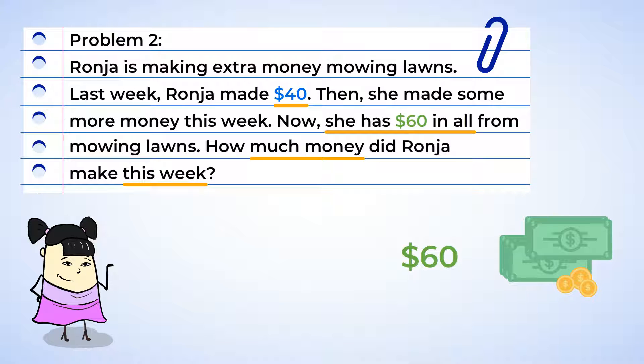This one is a little tougher. It sure seems like we are putting together the money from last week with the money from this week to get $60. We see the keyword in all, which usually means to add, but we don't know how much money Ronja made this week. So, the addition problem looks like this.